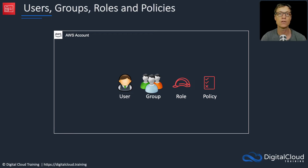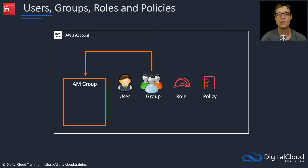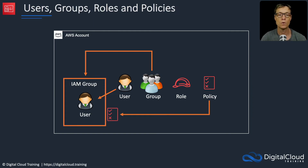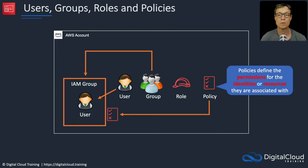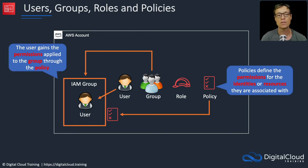A group is basically a container into which you can place your users. For example, we can add a user to our group, and you can add many users to a group. We can then apply something called a policy to our group. The policy defines the permissions for the identities or resources they're associated with. In this case, the user gains the permissions applied to the group through the policy.